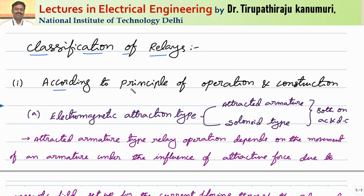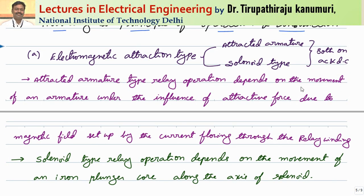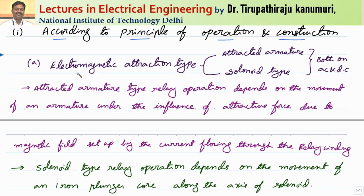First, according to the principle of operation and construction, they can be broadly classified into electromagnetic attraction type. These are based on the principle of electromagnetism — whenever a current passes through a coil, it produces a magnetic field that will attract some magnet or iron bar. Based on that, there are two types.